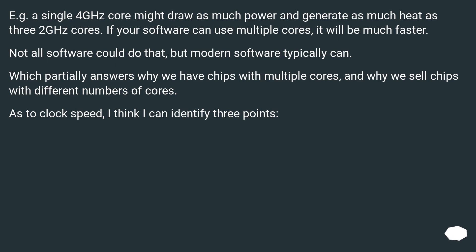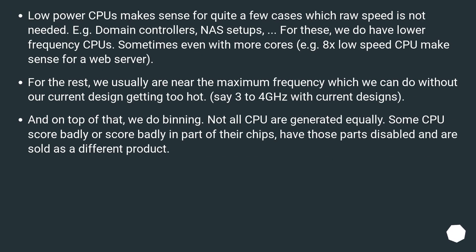As to clock speed, I think I can identify three points. Low-power CPUs make sense for quite a few cases where raw speed is not needed — for example domain controllers and NAS setups. For these, we do have lower-frequency CPUs, sometimes even with more cores: for example, 8 low-speed CPUs make sense for a web server. For the rest, we are usually near the maximum frequency which we can achieve without the current design getting too hot — say 3 to 4 GHz with current designs.